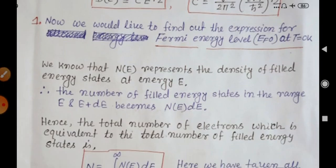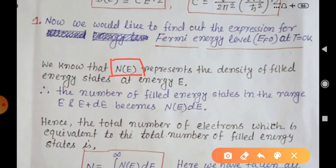N(E) represents the density of filled energy states at energy E — that is, the number of filled energy states per unit range of energy. If the energy is E and the next energy state is E plus 1, then the number of filled energy states in that range is N(E).